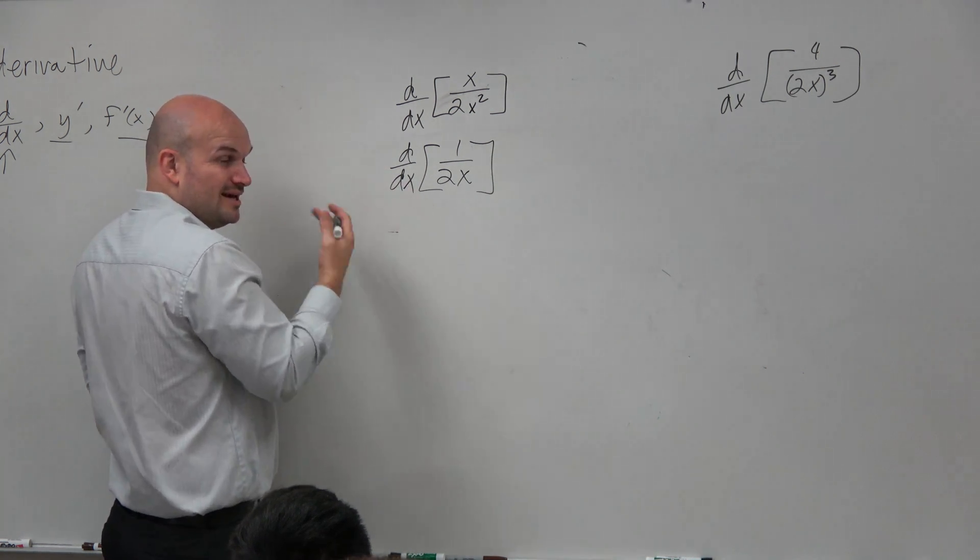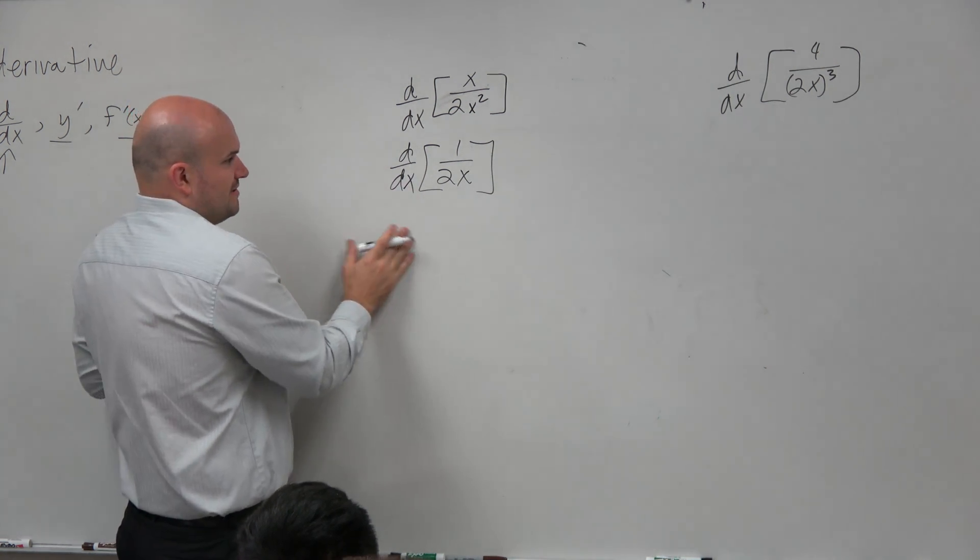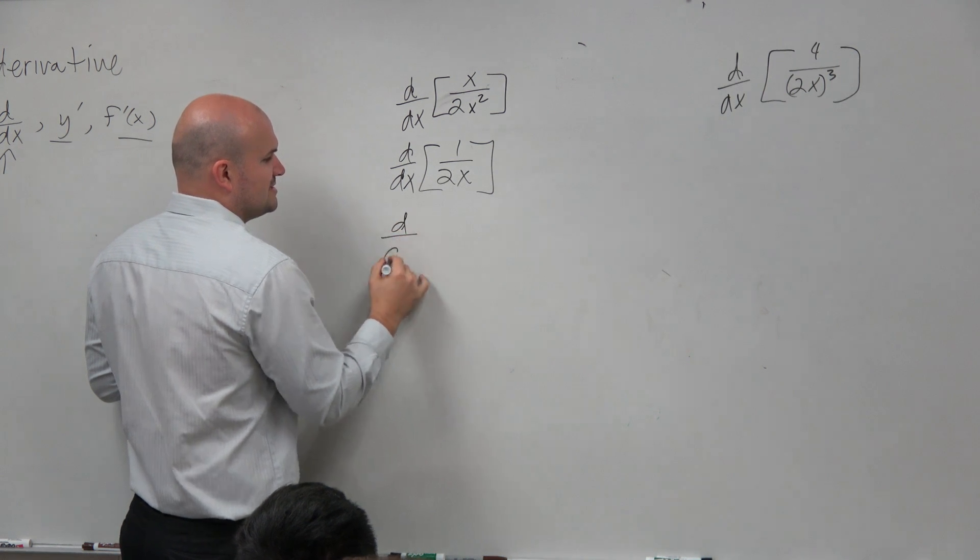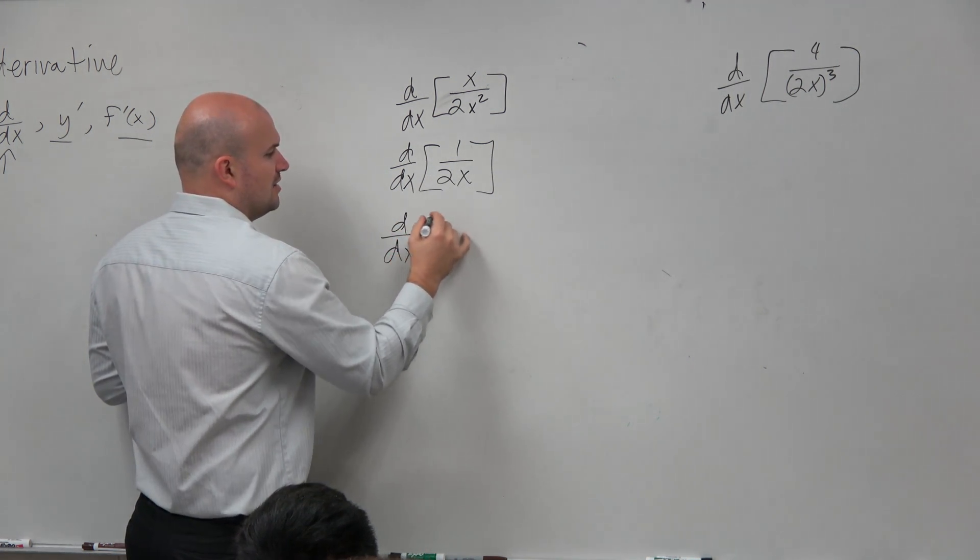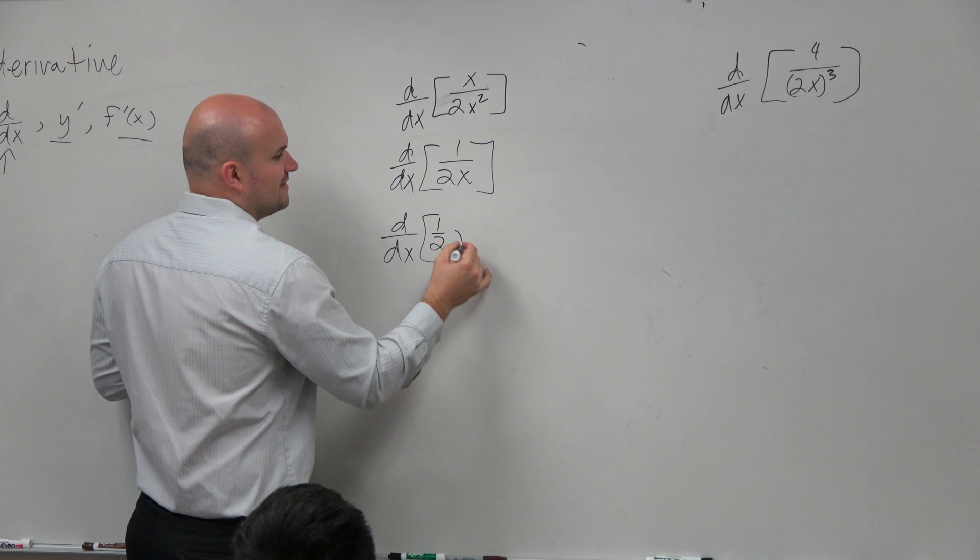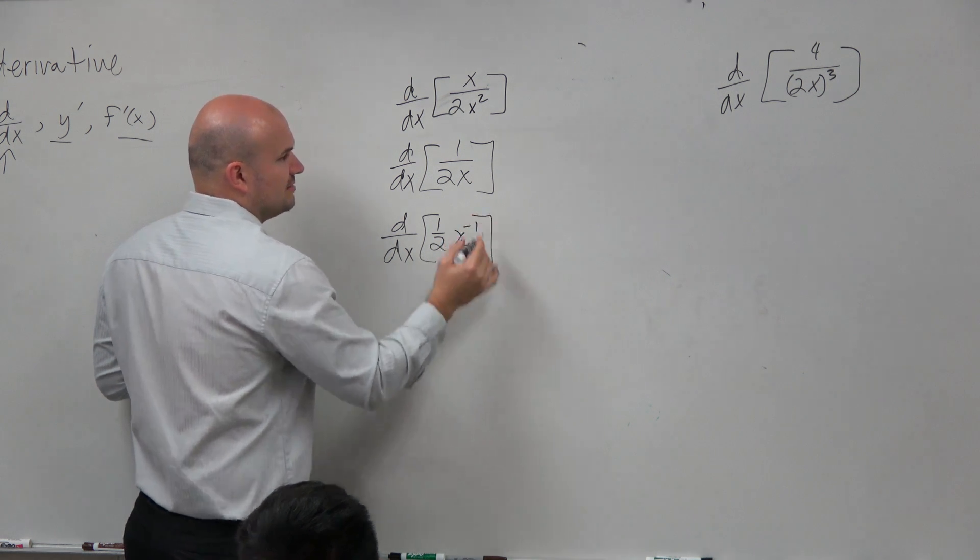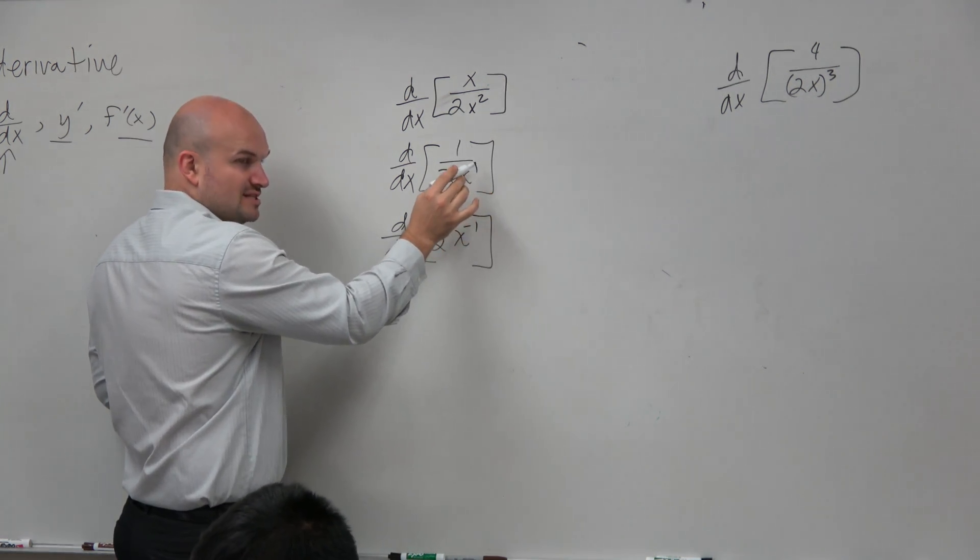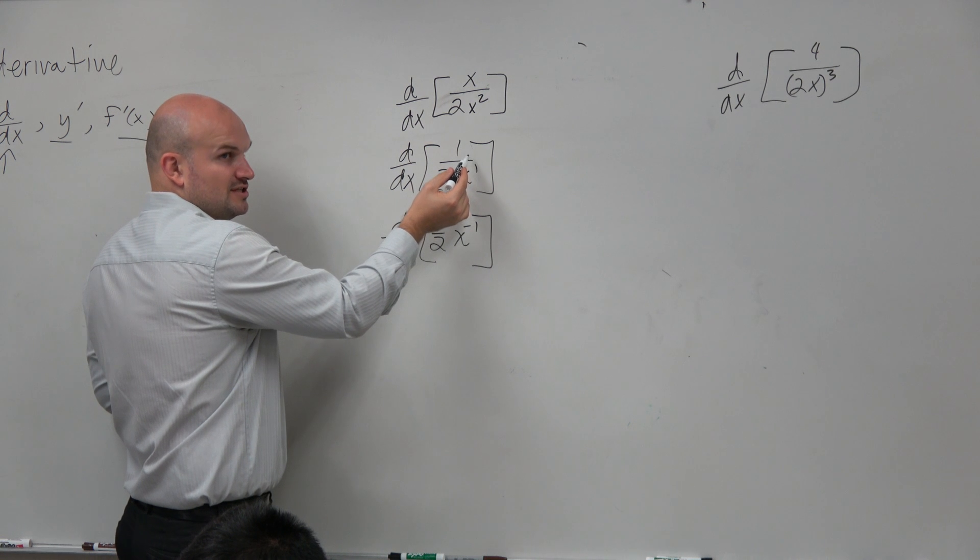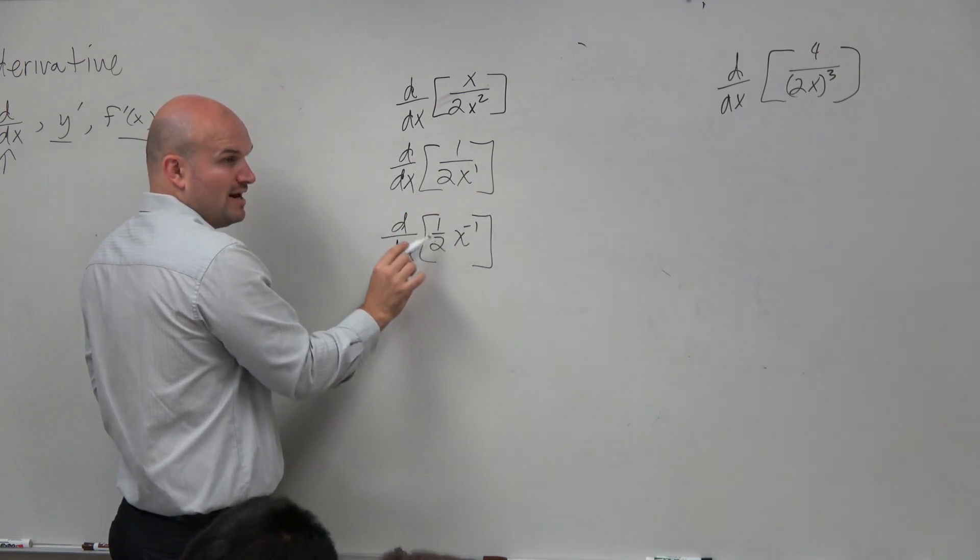I want to rewrite this in a term that we can find the derivative for. So I am going to rewrite this as d/dx of 1 half x to the negative first power. I don't want it to be x to the first in the denominator. I want it to be negative first in the numerator. And I am going to put my 1 half here in front.